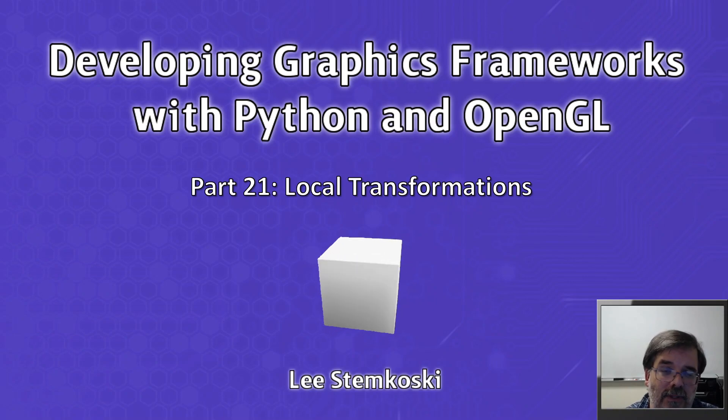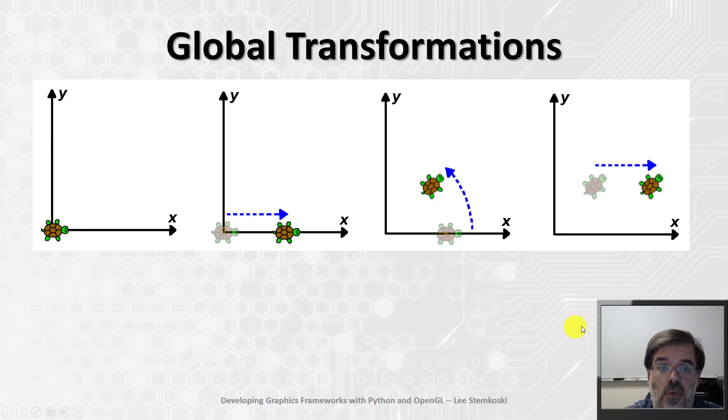At this point, you can create matrices corresponding to translation, rotation, and scaling transformations. So if you wanted to use these transformations, here's what you would do. Let's say you have some object, such as this turtle, which is defined by a collection of points.